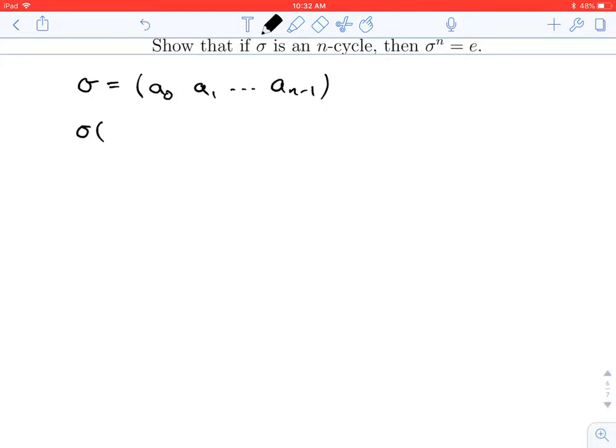So let's see what happens. If I apply sigma to some number that's actually moved by this cycle, then all it does is move it down one. Right. For instance, a sub 0 goes to a sub 1, a sub 1 goes to a sub 2. So sigma should send a sub i to a sub i plus 1. I can't quite write this, though. There's a little hiccup. Namely, if I applied sigma to a_{n-1}, that actually goes back to a sub 0. And then this i plus 1 doesn't make sense anymore.